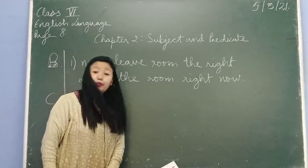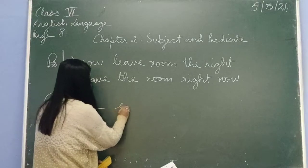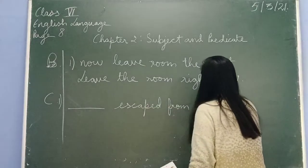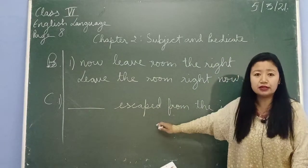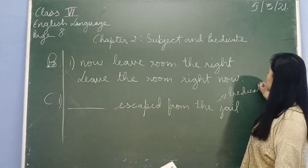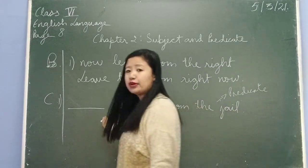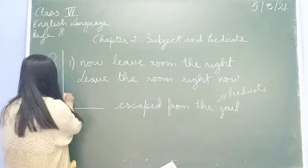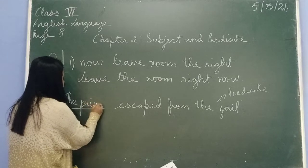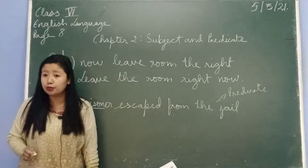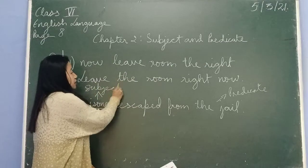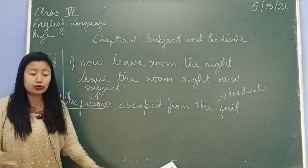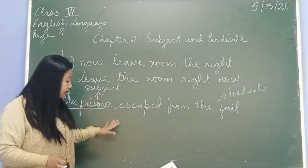For number one, the predicate is given but there is no subject, so you have to write the subject. Who escaped from the jail? Who goes to jail? Prisoners, convicts. So you can write 'the prisoner' — 'The prisoner escaped from jail.' You are adding the subject. For number six, the subject is given and you have to write the predicate. So please do Exercises B and C in your rough copy.